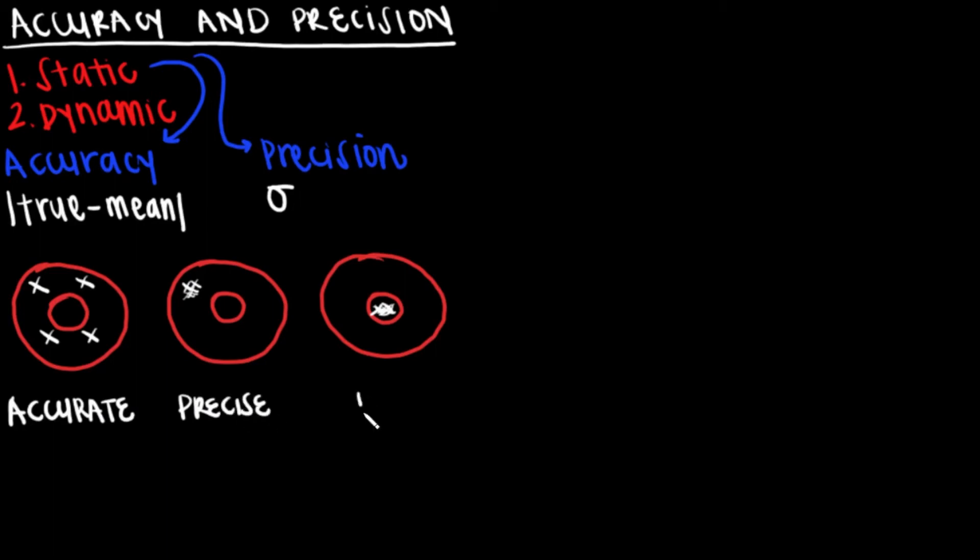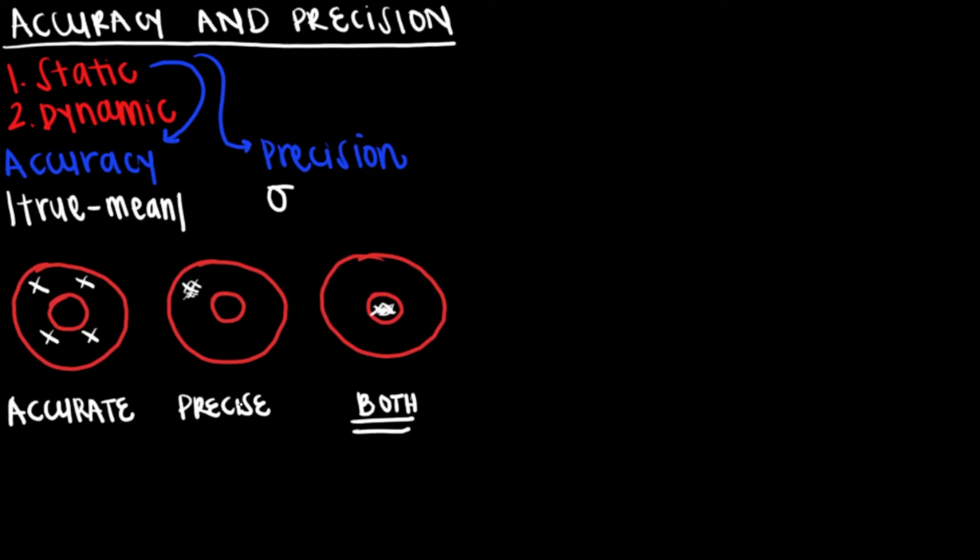In the same way, measurements can be precise but not accurate, meaning all the measured values are close together in magnitude, but they are far off from the true value. For example, hitting one single spot on the board every time, but it's not the bullseye.